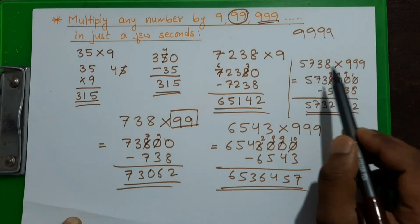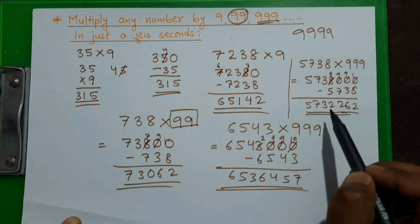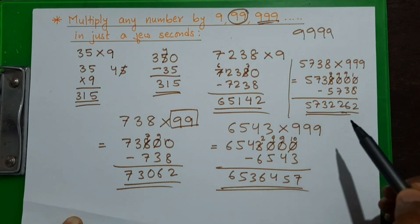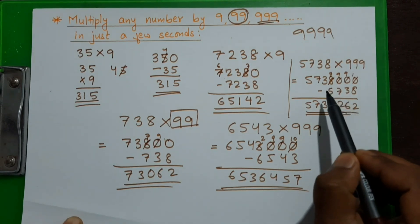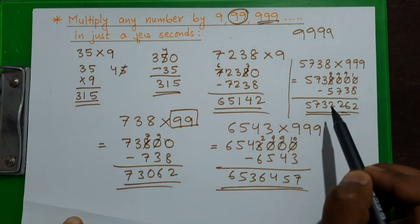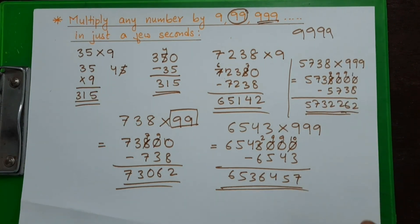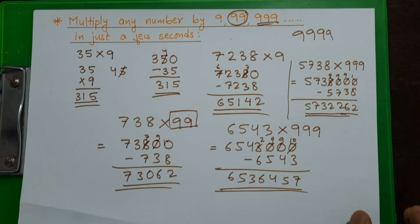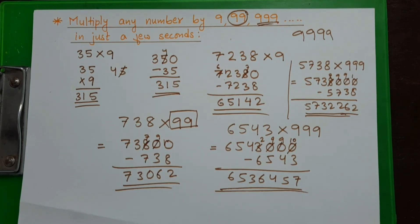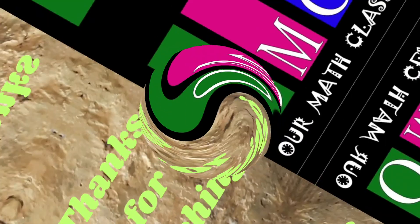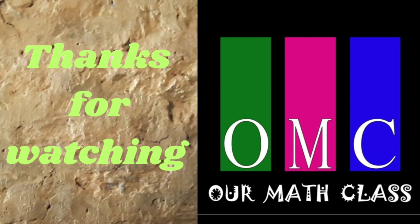This is how we multiply any given number by 999 in a very quick way. This method is very fast compared to the usual method. If you like our videos, please comment, share with your friends, and do not forget to subscribe. We will come up with more amazing quick calculation tricks — till then, keep practicing. Thank you very much!